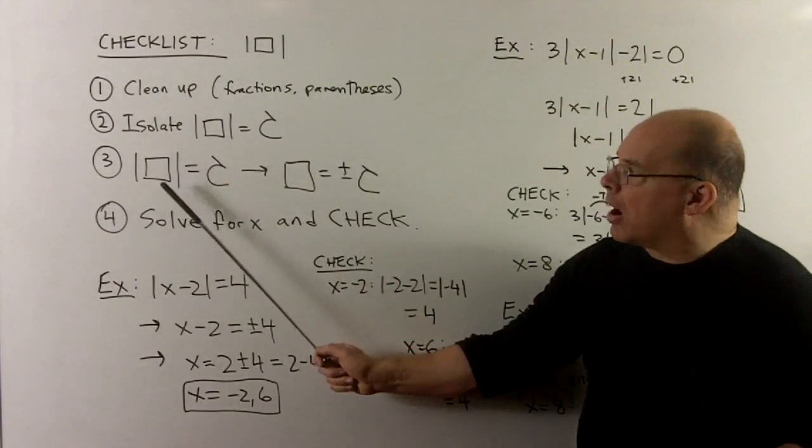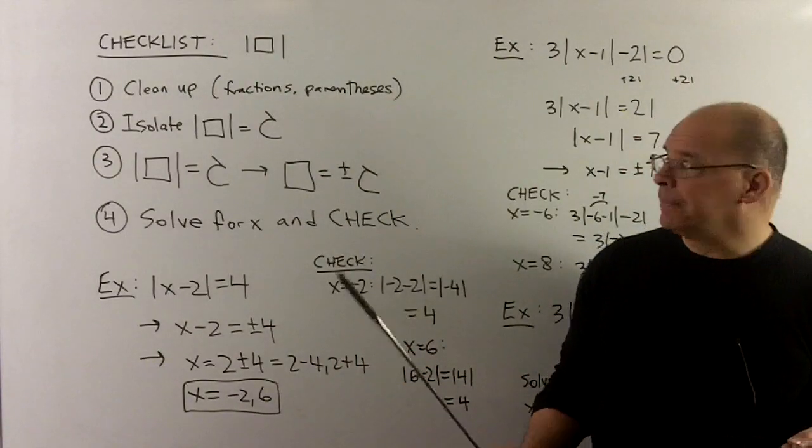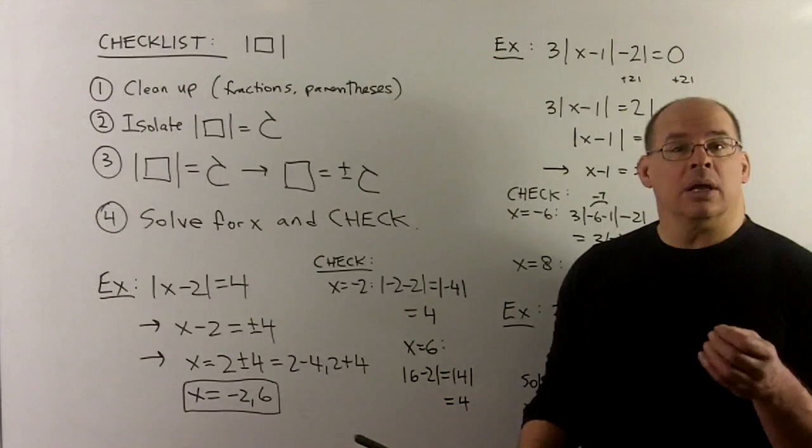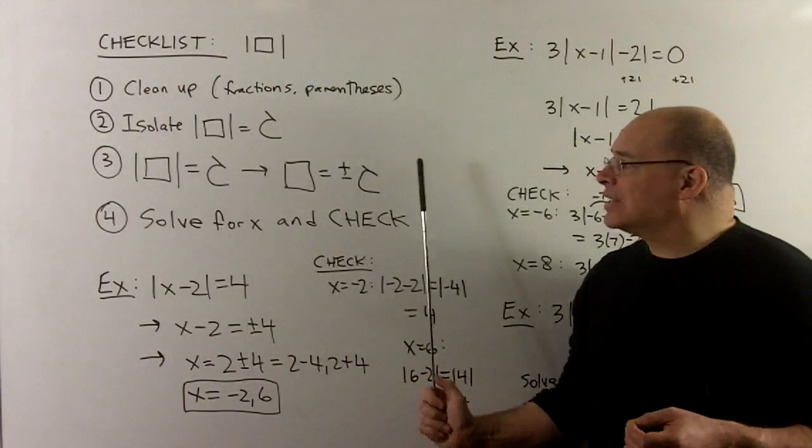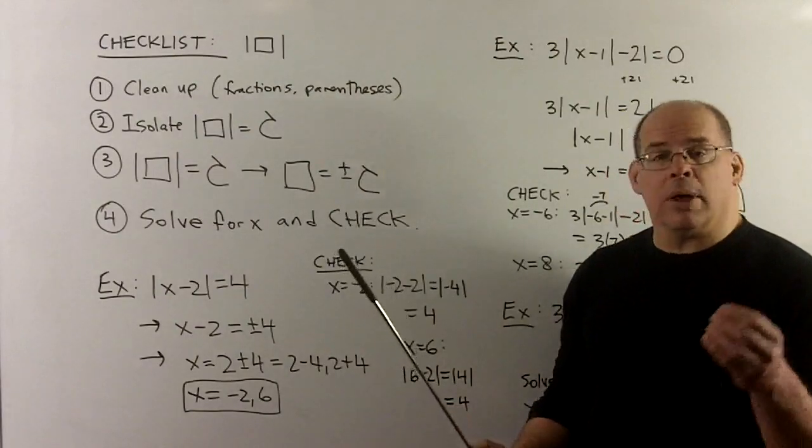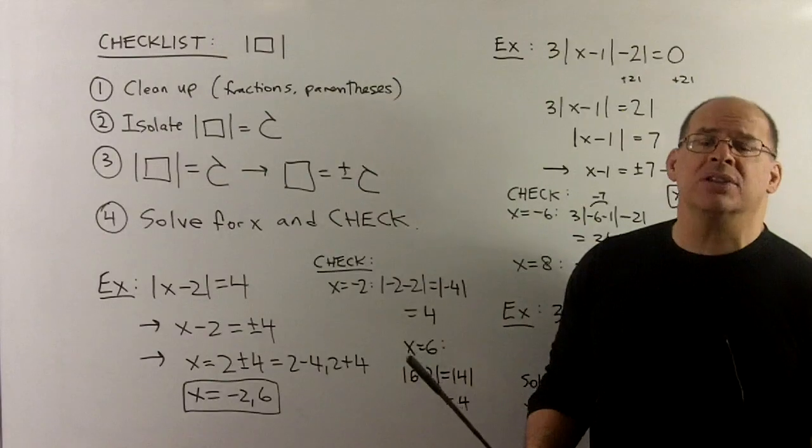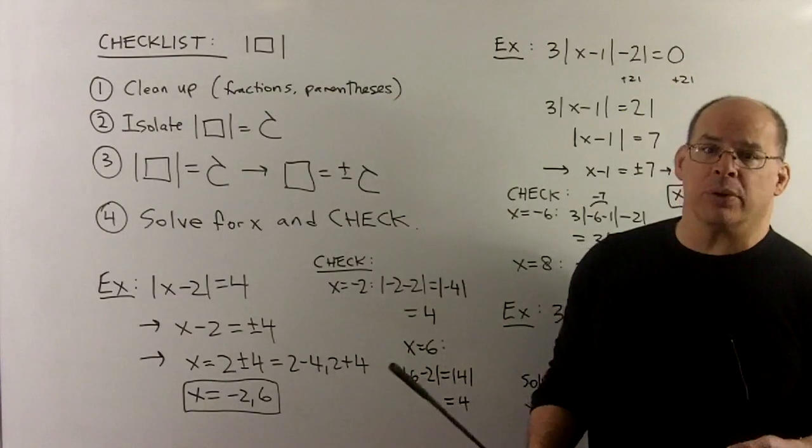So if I have absolute value of box equal to c, then what we do, to take away the bars, we just switch to box equal to plus minus c. Now, we should be able to solve for x, and it's pretty crucial to check your work. With absolute value, there will be cases where you get false solutions, we want to make sure we catch those.